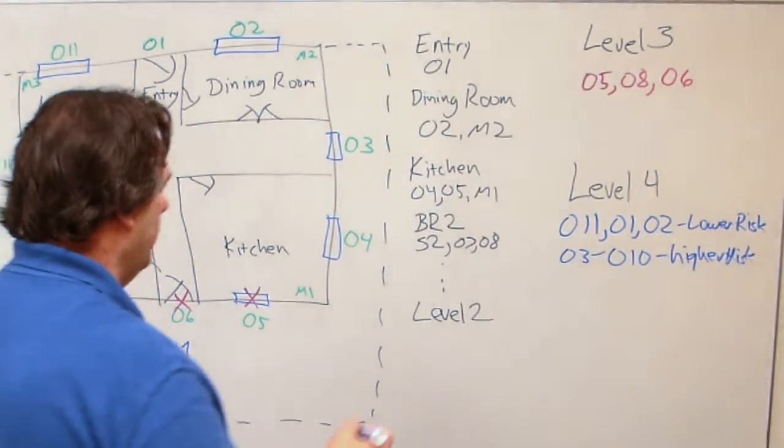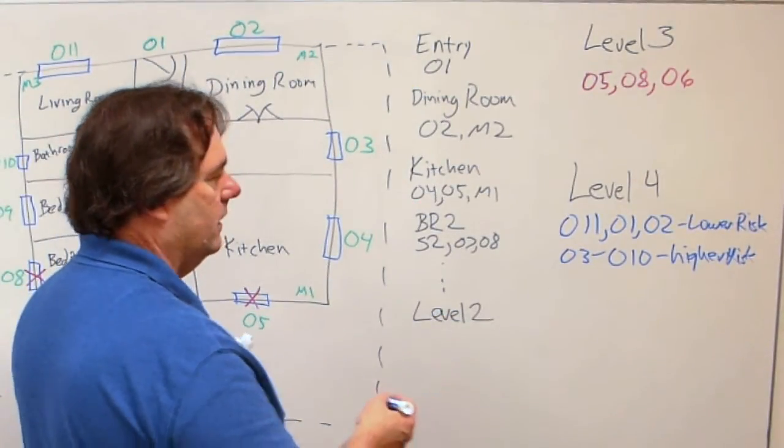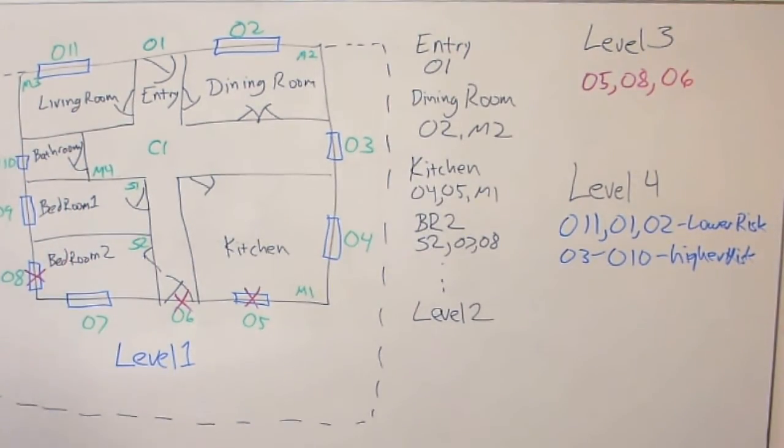And we might also say O5, O8, and O6 are highest risk because they've been compromised before.